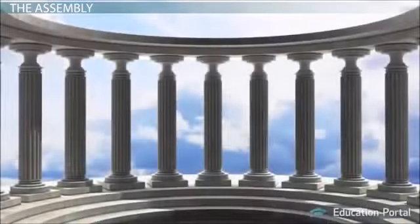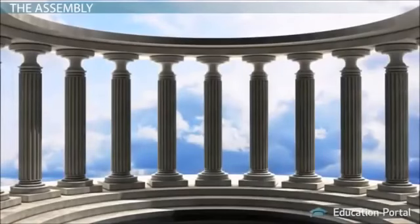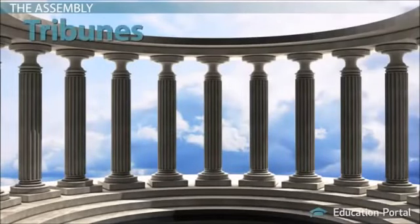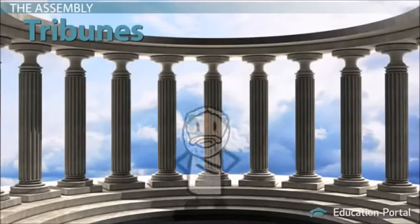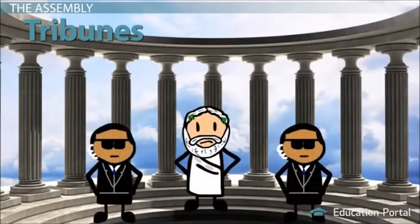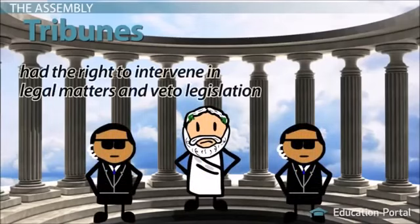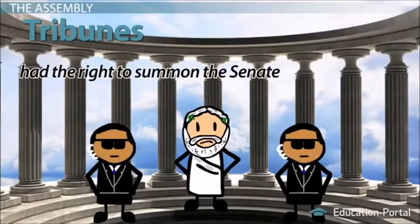With this setup, it's not hard to imagine why the assembly gained power. They were also given the right to elect tribunes, a position which acted very much like a president of the plebeians. The man holding this position had the right to intervene on legal matters and veto legislation. He also held the right to summon the Senate, even making proposals for their consideration.